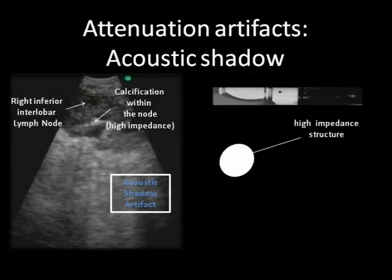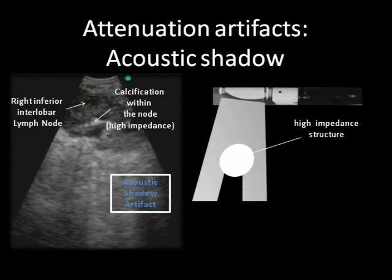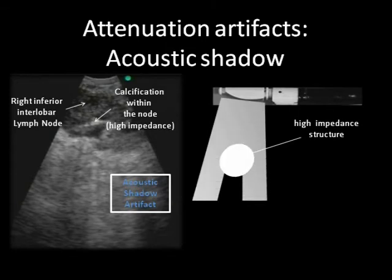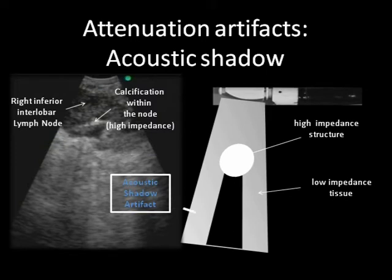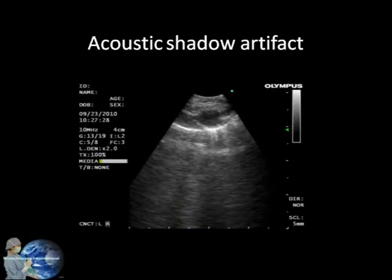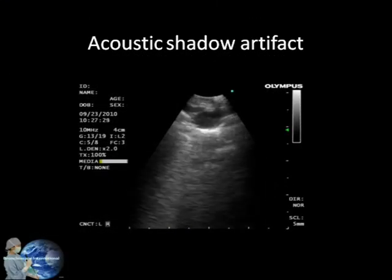The acoustic shadow artifact is the reverse of the tadpole tail. The area behind a high-density structure, such as a calcified lymph node, is hypoechoic compared with surrounding tissues. Here is an example of the acoustic shadow artifact.